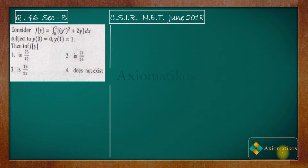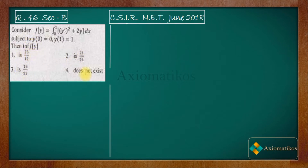Hello dear students, welcome to Axiomatic course. This video is part of the solution series for CSIR NET June 2018, and we are doing problem 46 of section B. It's a problem of calculus of variation. Consider J[y] functional: it is the integral from 0 to 1 of (y' squared plus 2y) dx, subject to y(0) = 0 and y(1) = 1. Find the infimum of J[y].